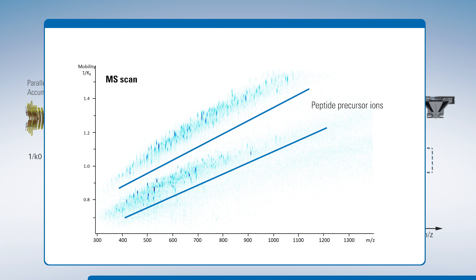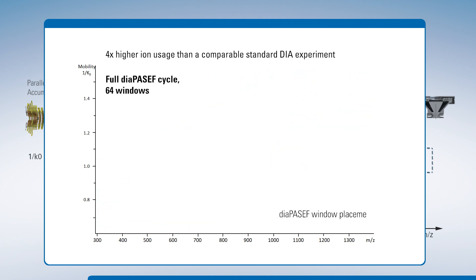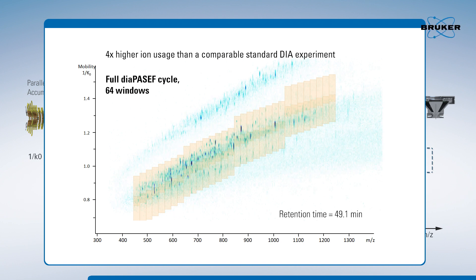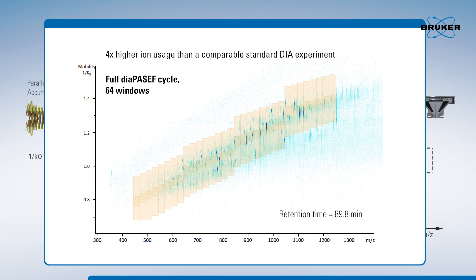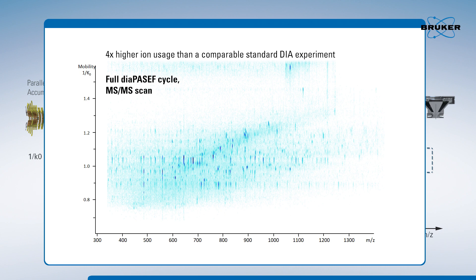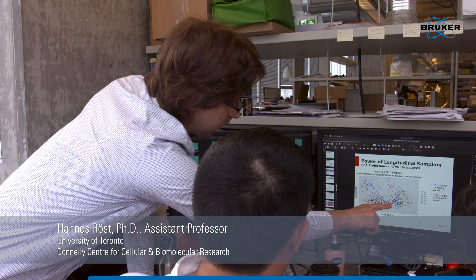DIA-PASEF window schemes are at least four times more efficient in ion utilization than DIA on other instruments, and depending on the sample and window scheme can be 100% efficient and very fast with unparalleled sensitivity. We have always known that DIA is the way forward, but we have never really achieved the full potential of DIA until now, when we added the ion mobility separation.